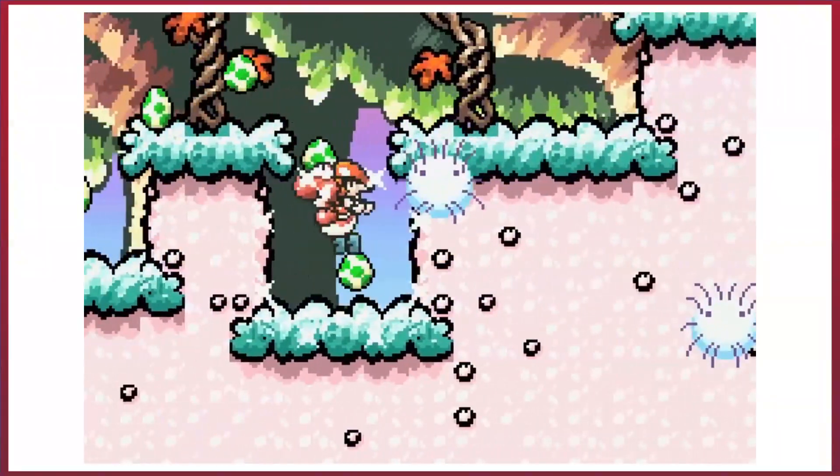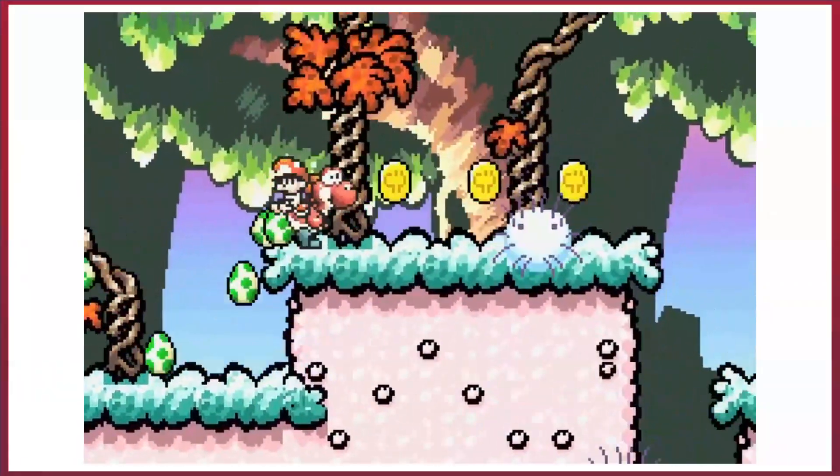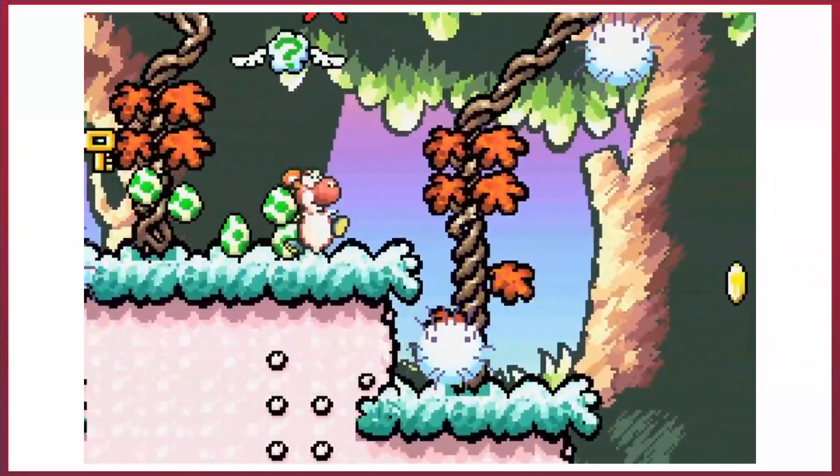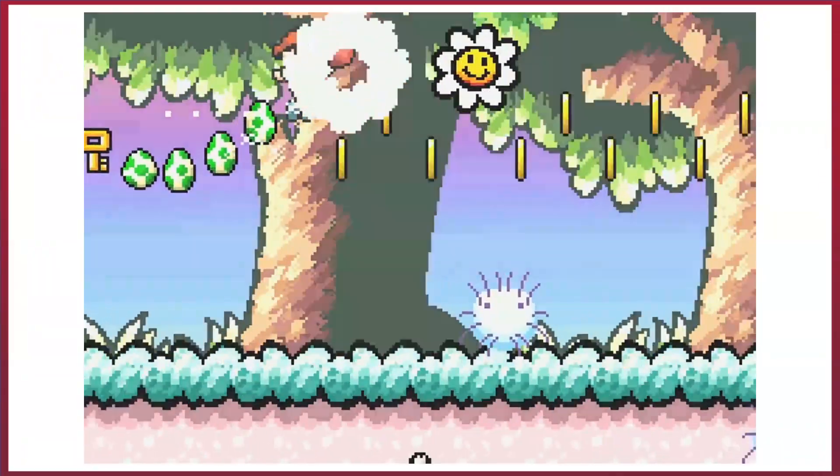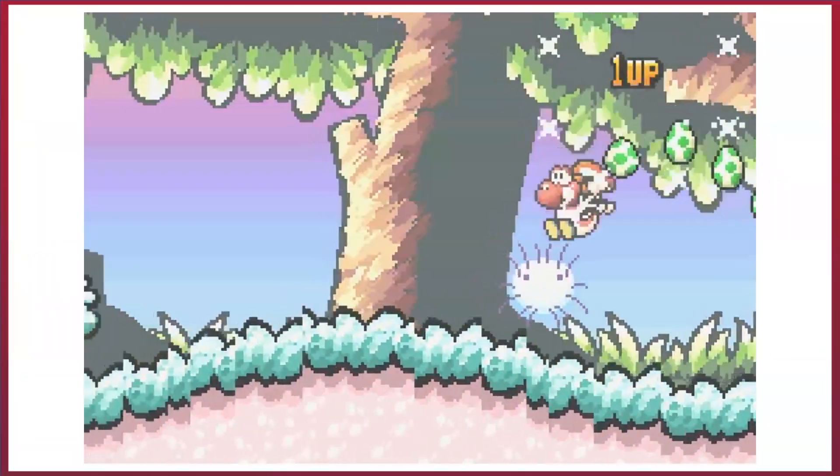This is because Fuzzies can't be killed by Yoshi. As soon as Yoshi touches or attempts to swallow a Fuzzy to turn it into an egg, he becomes intoxicated for about 18 seconds. During this period, Yoshi's eyes widen, his pupils dilate,